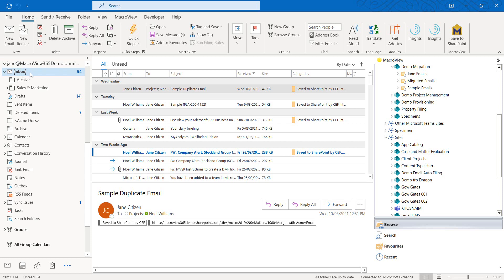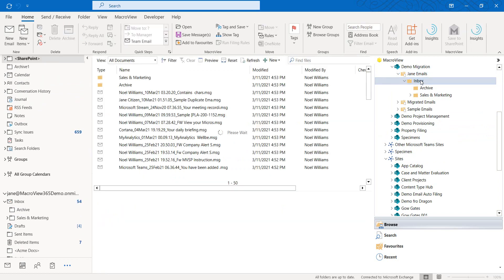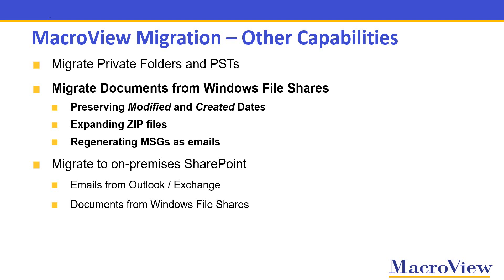Here's an example of a private inbox which contains some subfolders, which has been migrated to this document library in SharePoint Online. Clicking the inbox shows the migrated emails and subfolders containing migrated emails as well. MacroView Migration can also handle the migration of documents from Windows File Shares. As it does those migrations, it preserves modified and created dates, automatically expands existing zip files, and regenerates any MSGs or EMLs that have been saved to those file share areas as emails — that is, with their attachments and metadata.